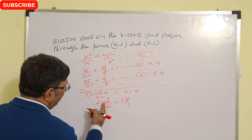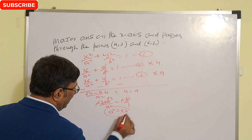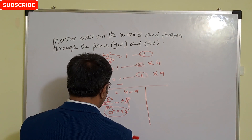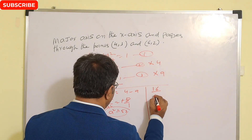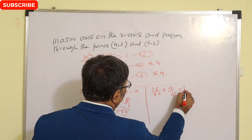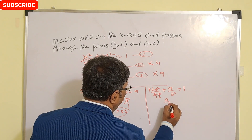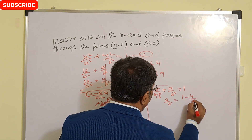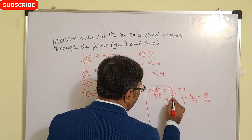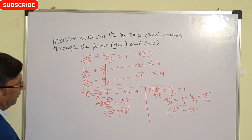So a² equals 260 divided by 5, which gives a² equal to 52. Now substituting this value of a² into equation two: 16 upon 52 plus 9 upon b² equal to 1. Simplifying, 16/52 equals 4/13, so 9 upon b² equals 1 minus 4/13, giving 9/13. Therefore b² equals 13.